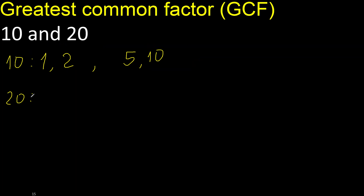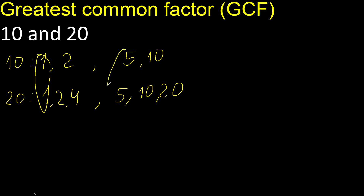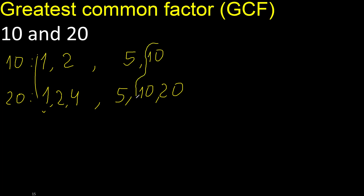Factors always start with 1. 20 divided by 1 is 20. Next, 2 — 20 divided by 2 is 10. Next, 3 — divided by 3 — 20 cannot be divided by 3. Next, 4 — divided by 4 is 5. Next, 5 — 5 is here. Comparing the factors: 10 is the largest common factor.